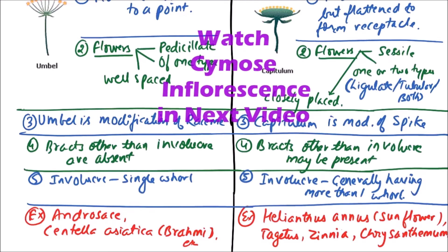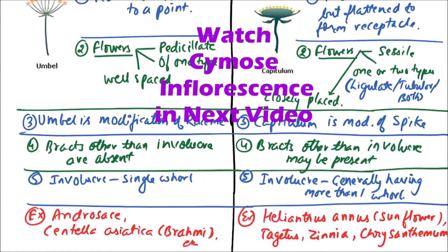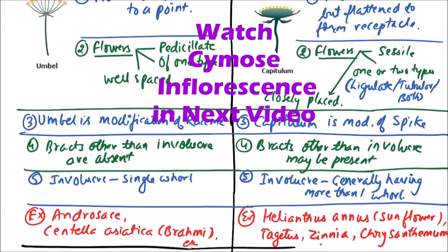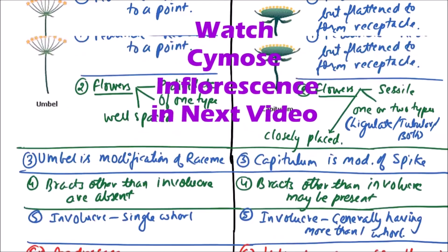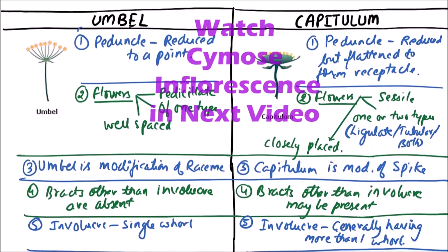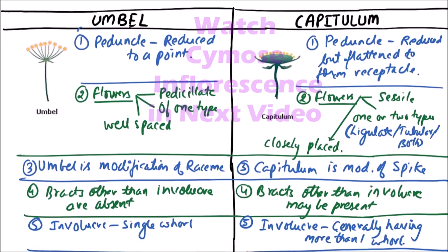So these are the various points of differences and examples between the umbel and capitulum type of inflorescence. Thanks for watching this video.